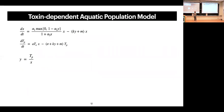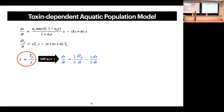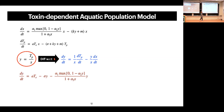So far we have three equations in our toxin-dependent aquatic population model. If we differentiate the body burden equation with respect to time using the quotient rule and substitute the right-hand sides of the first two differential equations, we get a differential equation describing the rate of change of body burden over time.